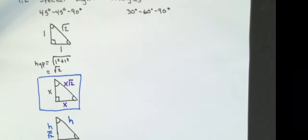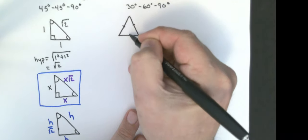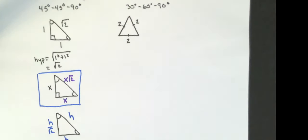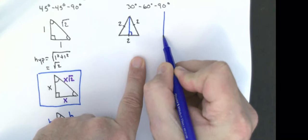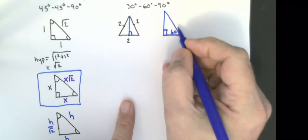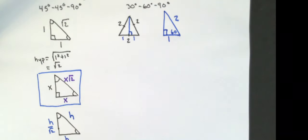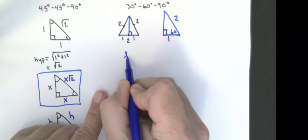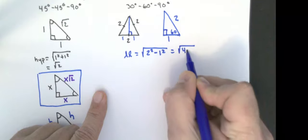For the 30-60-90 triangle, I'm going to start with an equilateral triangle where all three sides are equal and each angle is 60 degrees. I'll call each side two. I drop an altitude to cut the triangle in half — that gives me my 30-60-90 triangle. The angle of 60 remains, the other becomes 30. The hypotenuse is two, and because we cut it in half, the short leg is one. The long leg is the square root of two squared minus one squared, which is the square root of four minus one, which is the square root of three.